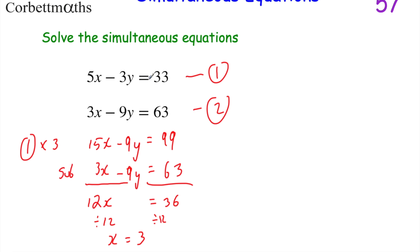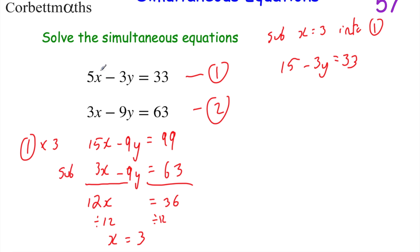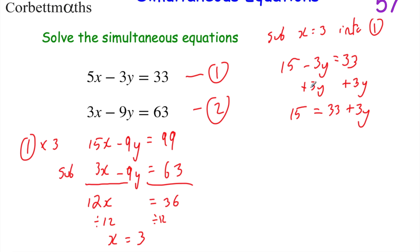We're going to substitute x = 3 into equation 1 to find y. So 5 times 3 is 15: we've got 15 − 3y = 33. I'm actually going to add 3y to both sides so that my 3y is positive — that makes things a bit easier. So I get 15 = 33 + 3y.